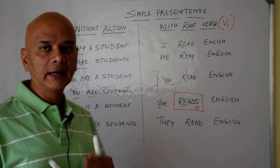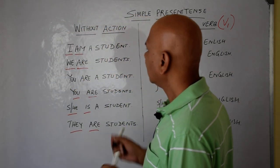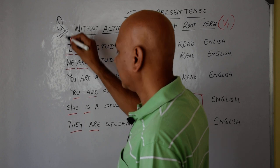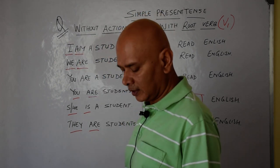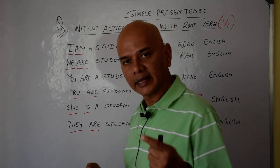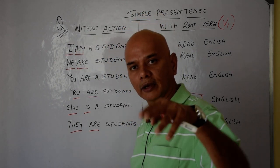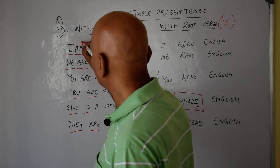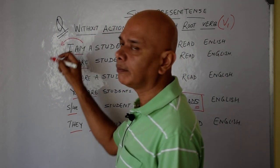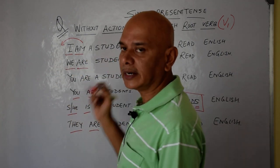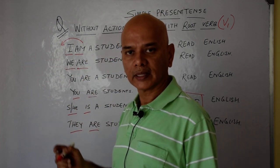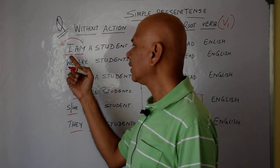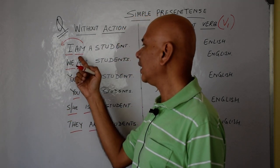Now how to make questions — it is very simple. The technique is the same as in previous videos: just take out the supporting verb to the front. For example, 'I am a student' becomes 'Am I a student?' — that becomes a question.